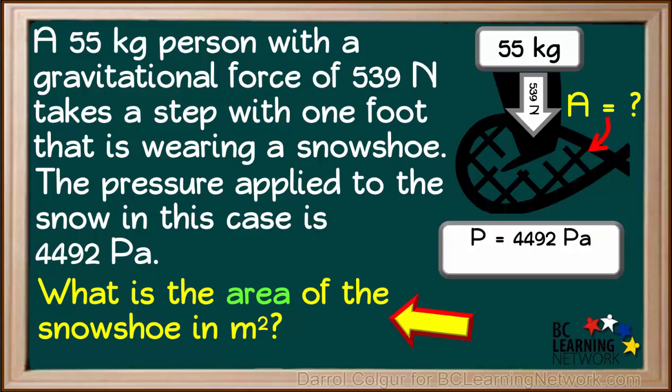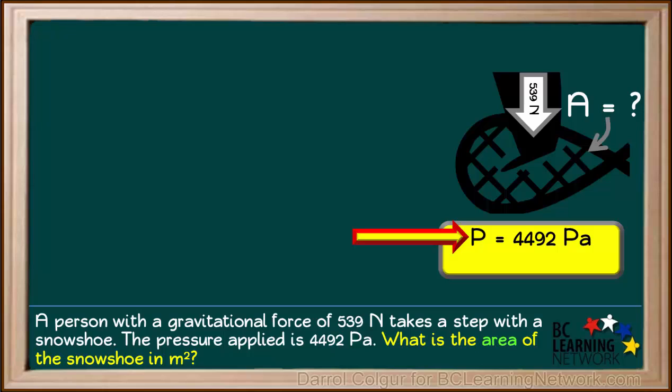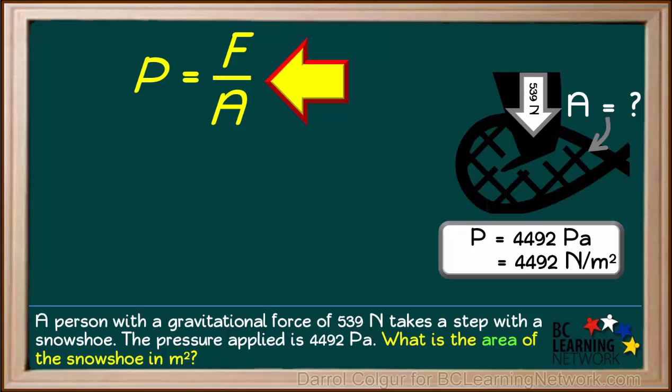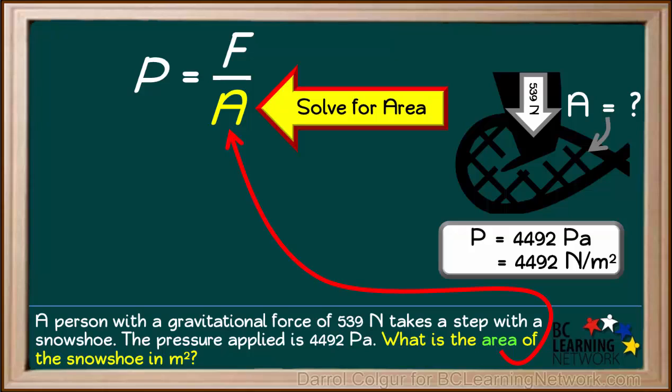We're asked for the area of contact the snowshoe has with the snow. Remember that pressure, expressed as 4492 Pascals, is the same as 4492 Newtons per square meter. The formula for pressure is pressure equals force divided by area, or P equals F divided by A. We're asked to find the area of the snowshoe, so we rearrange this equation to solve for area A.